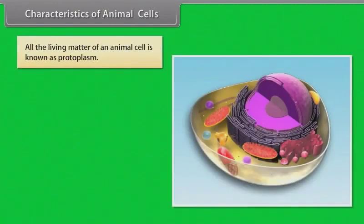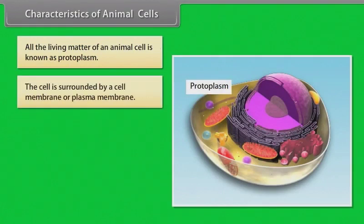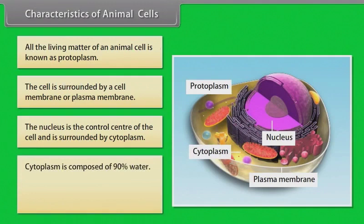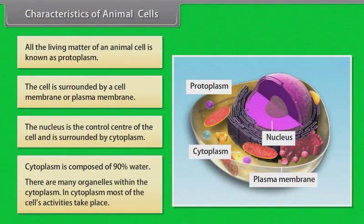Characteristics of animal cells: All the living matter of an animal cell is known as protoplasm. The cell is surrounded by a cell membrane or plasma membrane. The nucleus is the control center of the cell and is surrounded by cytoplasm. Cytoplasm is composed of 90% water, and there are many organelles within it. In the cytoplasm, most of the cell's activities take place.